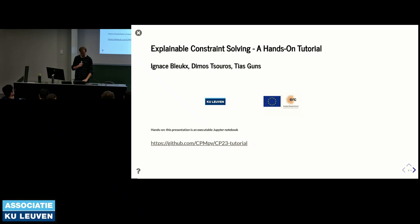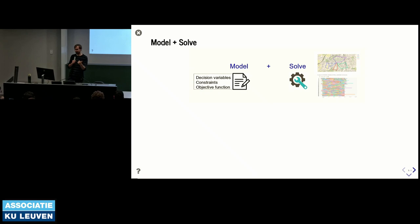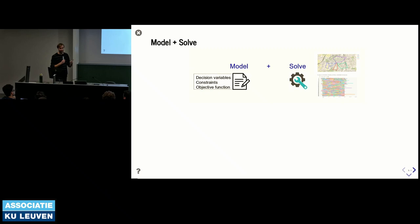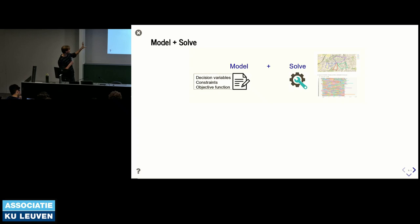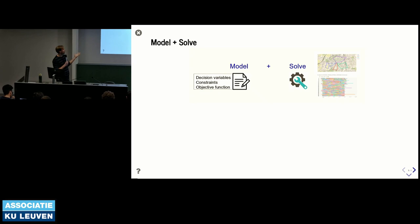Before we talk about explainable constraint solving, what do we mean by constraint solving? Constraint solving is a family of techniques for solving combinatorial optimization problems. The typical paradigm is model plus solve: the model is a formal specification consisting of decision variables, constraints over those variables, and an objective function expressing solution quality. This can be used to solve vehicle routing problems, scheduling problems, planning problems, timetabling problems, and much more.